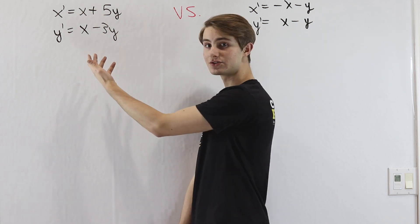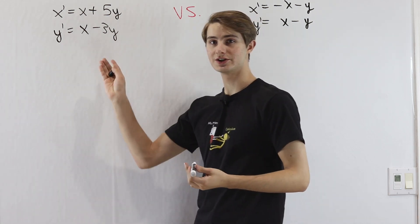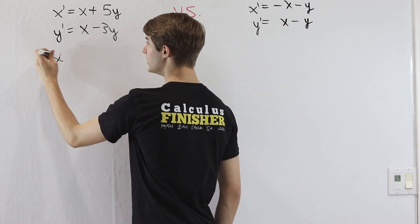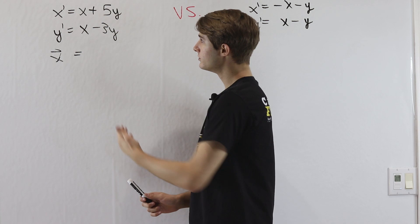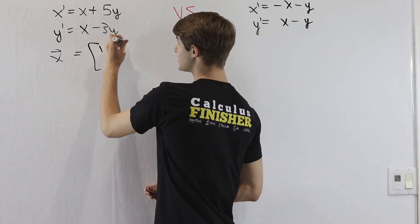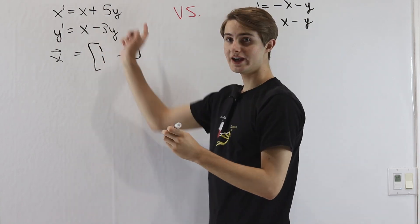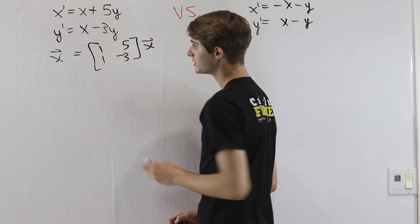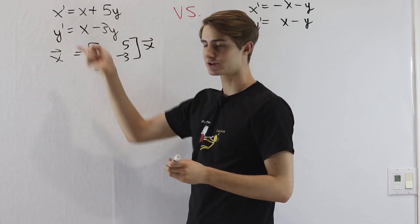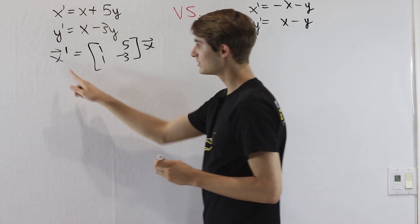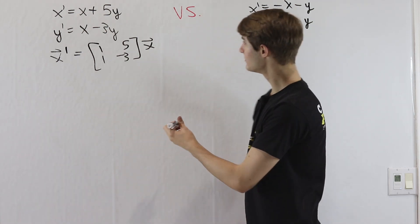To start off, let's look at this first equation. We want to turn this system of differential equations into one equation using vectors. We can represent the coefficients of x and y as a matrix: 1, 5, 1, negative 3. We'll call the vector x, y, which means on the left side when we differentiate x, y we get x prime, y prime — that's the derivative of our vector x.